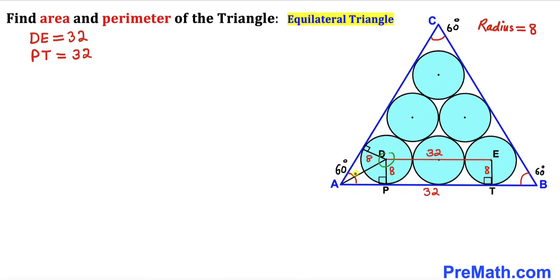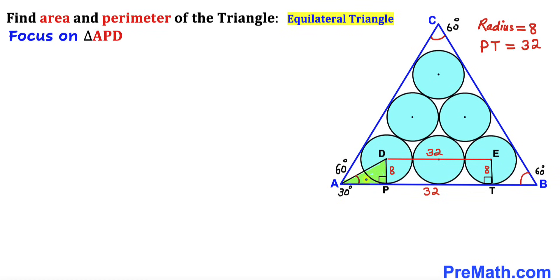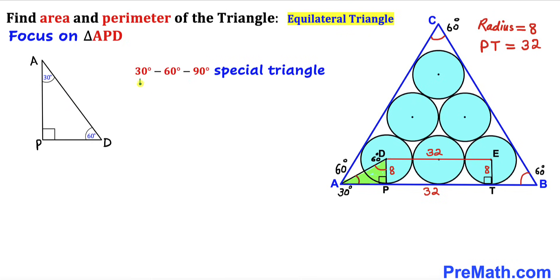I have connected center D with point A, giving us two congruent right triangles. Since the side lengths are equal and these are radii, line AD is the angle bisector, so this angle is half of 60 degrees, which is 30 degrees. Focusing on right triangle APD: angle at P is 90 degrees, angle at A is 30 degrees, so the remaining angle is 60 degrees. This is our 30-60-90 special triangle.